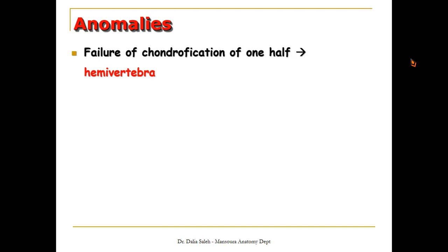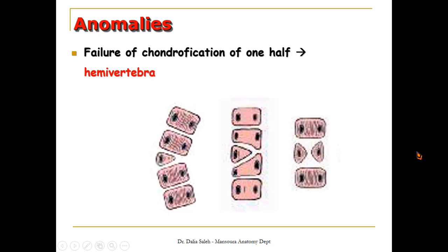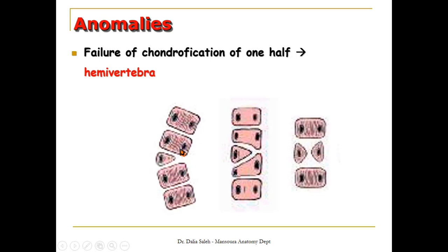Other anomalies include hemivertebra, which occurs when there is failure of chondrification of one half of a vertebra. It takes many shapes — on one side of a vertebra there is lack of chondrification, resulting in hemivertebra. Because of the hemivertebra, the spine has to tilt or bend to one side. If hemivertebrae occur in two consecutive vertebrae, the bending of the spine may manifest anteriorly.